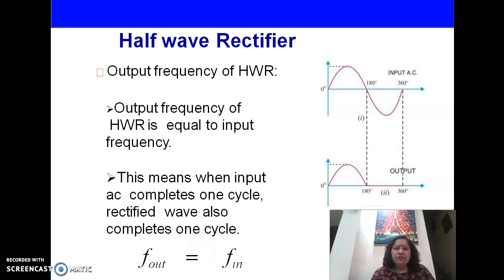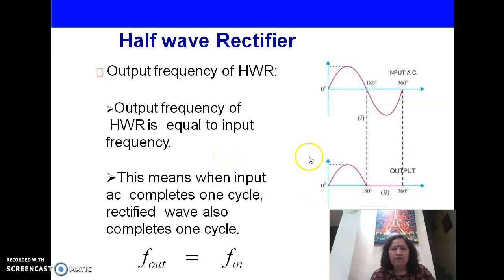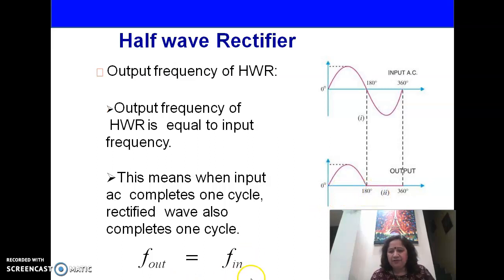The output frequency of a half-wave rectifier is equal to the input frequency. This means that when the input completes one cycle of the signal, the output also completes one cycle of the signal. So F_out equals F_in.